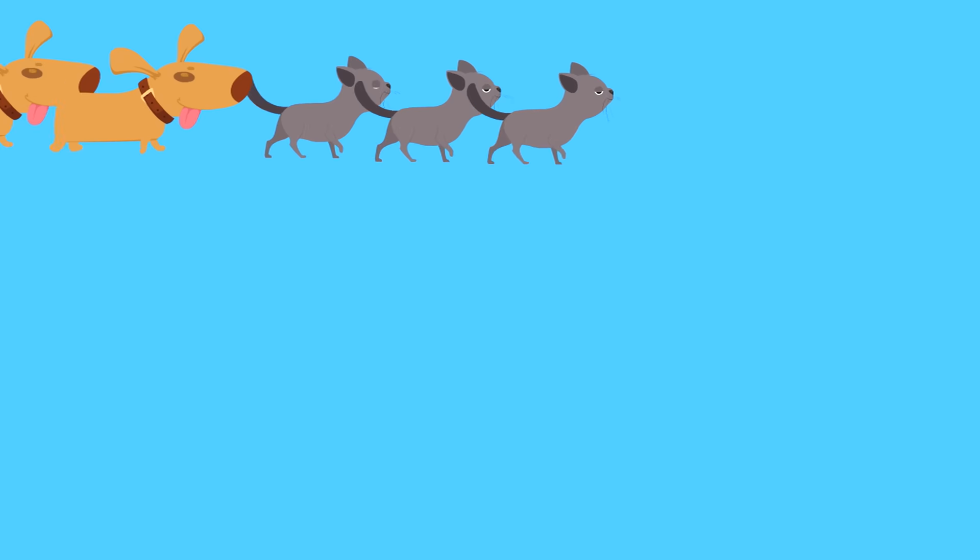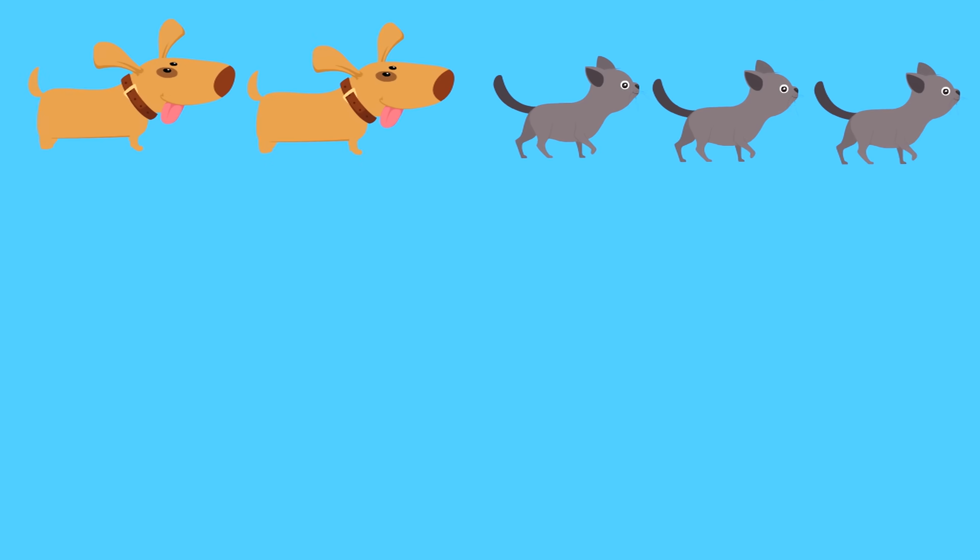Let's try this final example. Let's say there are five pets. Five pets. Two of them are dogs and three of them are cats. What fraction of the pets are cats? That's a good question. What fraction of the pets are cats?